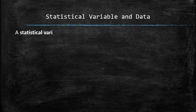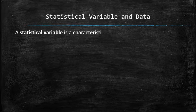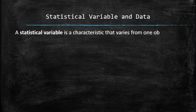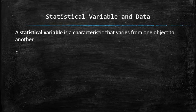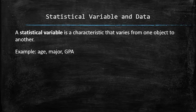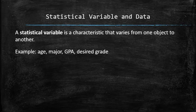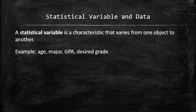A statistical variable is a characteristic that varies from one object to another. For example, age, major, GPA, and the desired grade are not all the same for all students, therefore each one of them is a statistical variable.